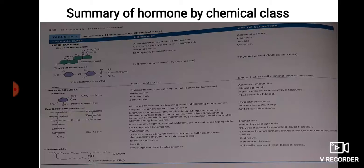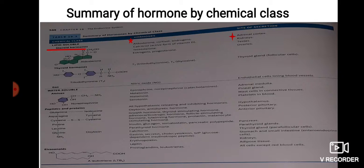In the summary of chemical hormones, steroid hormones include aldosterone, cortisol, and androgen, derived from the adrenal cortex. Calcitriol, the active form of vitamin D, is secreted by the kidney. Testosterone is secreted by the testis, and androgen and progesterone are secreted by the ovary.